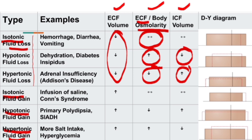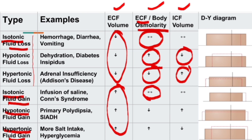In body fluid disturbances due to fluid gain, there is an increase in ECF volume. If we gain isotonic fluid, there is no change in ECF osmolarity. Gaining hypotonic fluid decreases ECF osmolarity, while gaining hypertonic fluid increases ECF osmolarity. In reverse, ICF volume changes accordingly — an increase in ECF osmolarity decreases ICF volume.